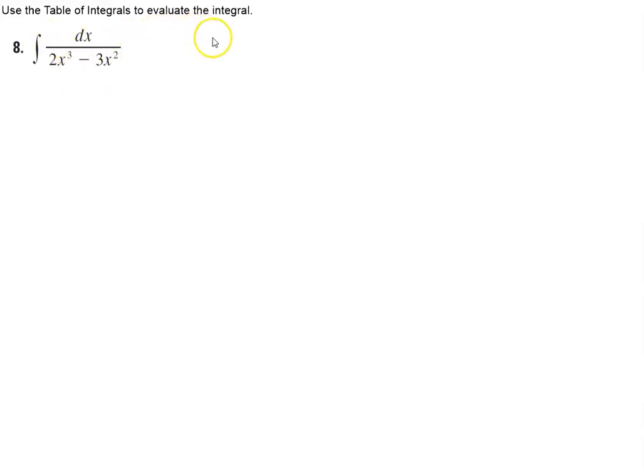Okay, here we're going to use the table of integrals to evaluate the following integral. The integral that we have is 1 dx divided by 2x cubed minus 3x squared.